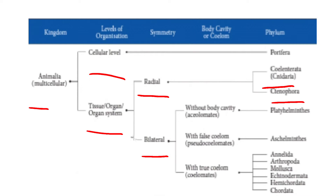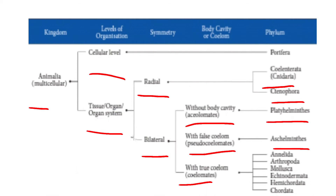At the tissue level, in the bilateral level, you have animals without a body cavity — that is, Acoelomate, which includes Platyhelminthes. With a false coelom, that is Pseudocoelomate, which includes Aschelminthes. And with a true coelom, that is Coelomate, which contains Annelids, Arthropods, Mollusca, Echinodermata, Hemichordata, and Chordata.